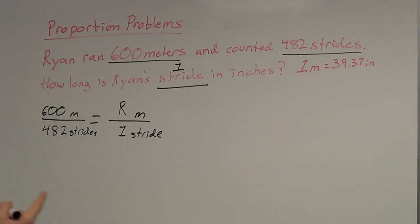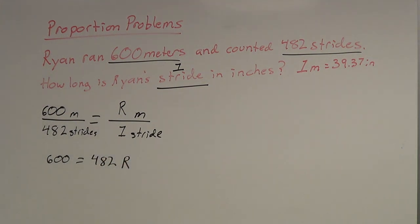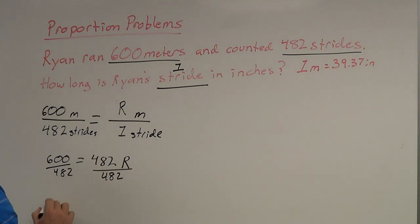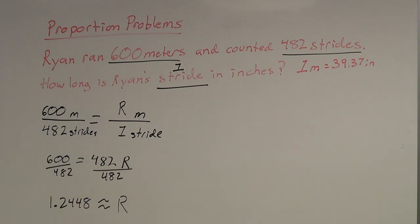This is a proportion problem, so we're going to use cross product to solve this. 600 times 1 is just 600, equals 482 times R. Then I'm going to divide by 482, which gives me about 1.2448. That's approximately what that is. If you plug that into your calculator, you get a long repeating decimal. I'm going to round to about 4 decimal places — it makes it easier to work with. Make sure you round to 4, 5, 6, or 7 decimal places; don't round to just 1 decimal place, as that won't give you an accurate measurement.